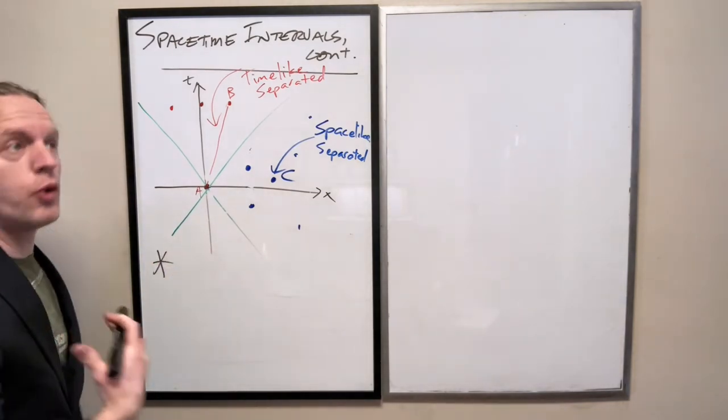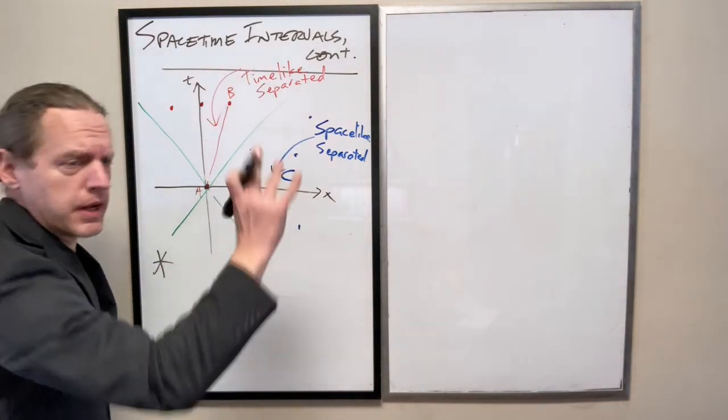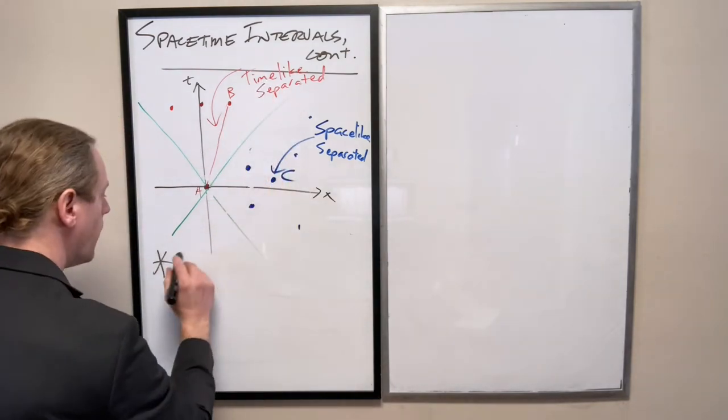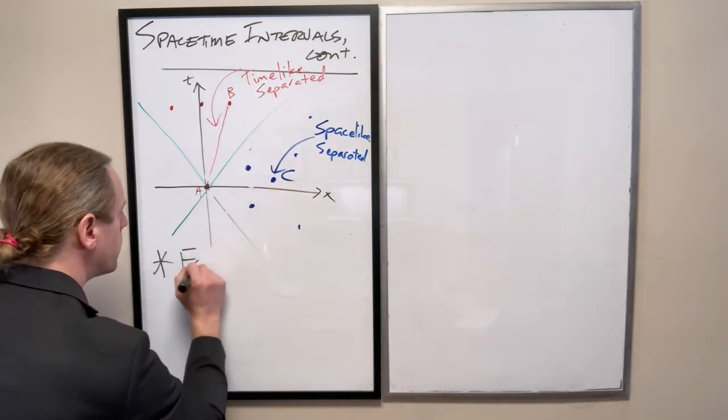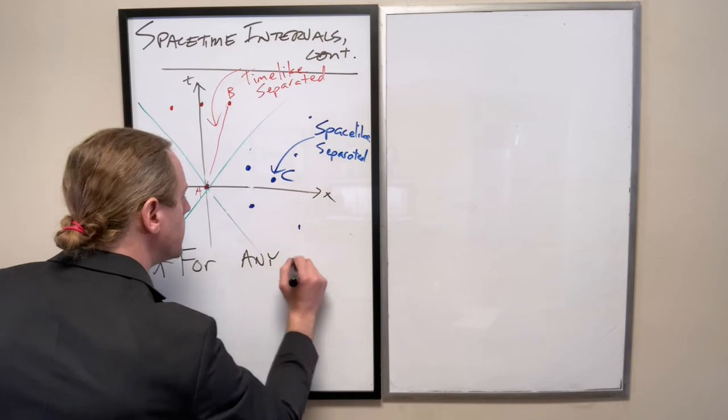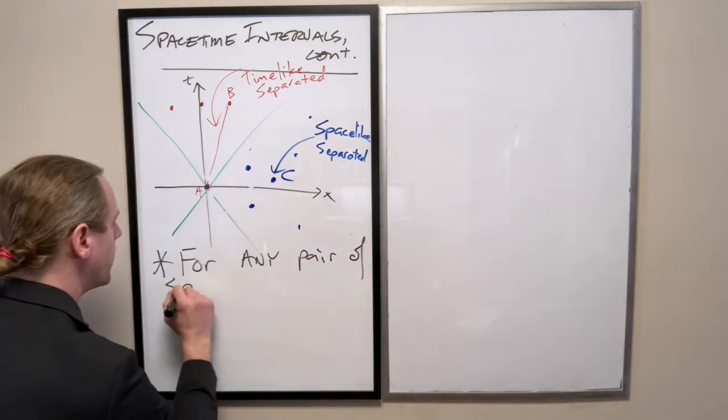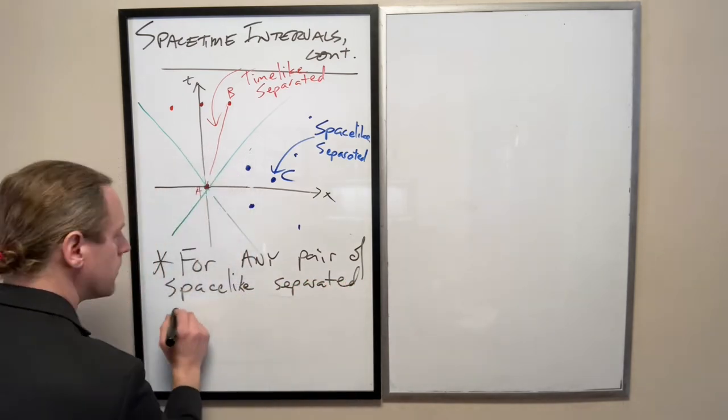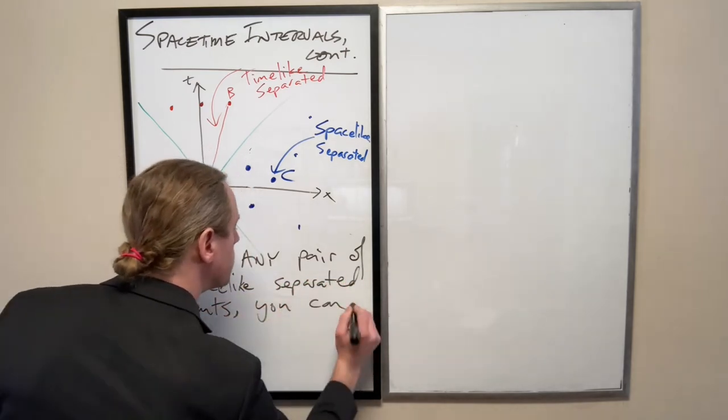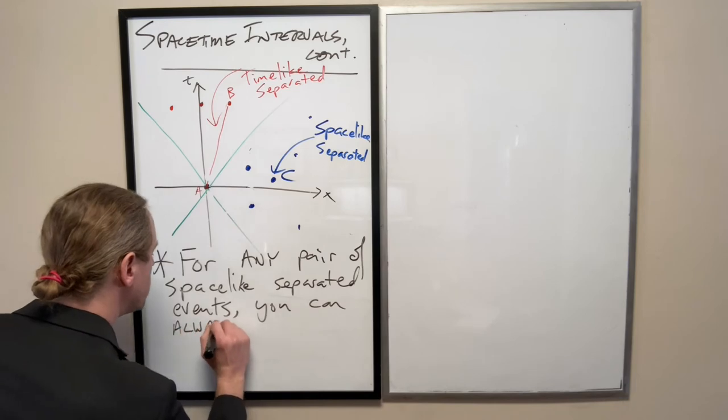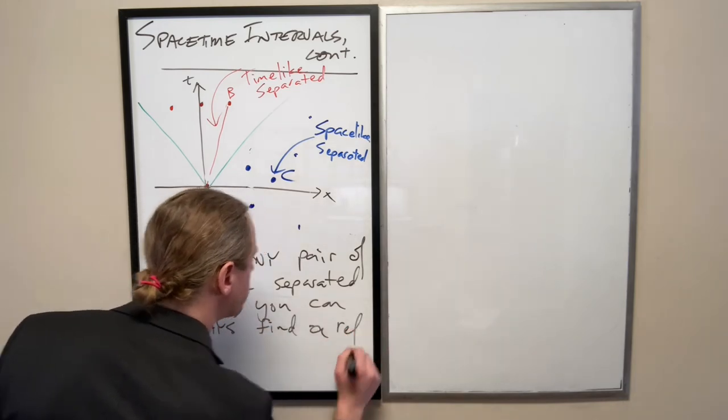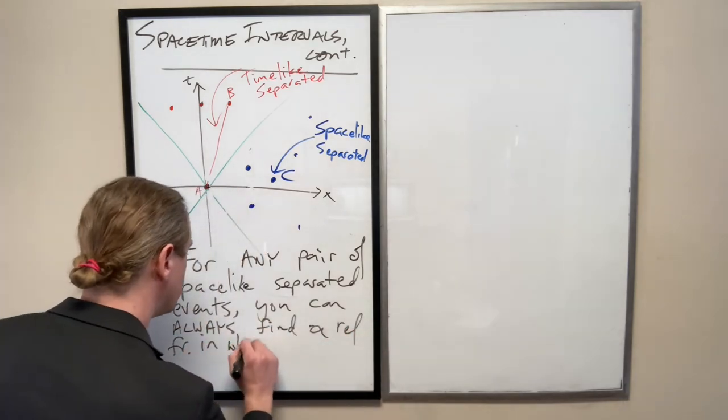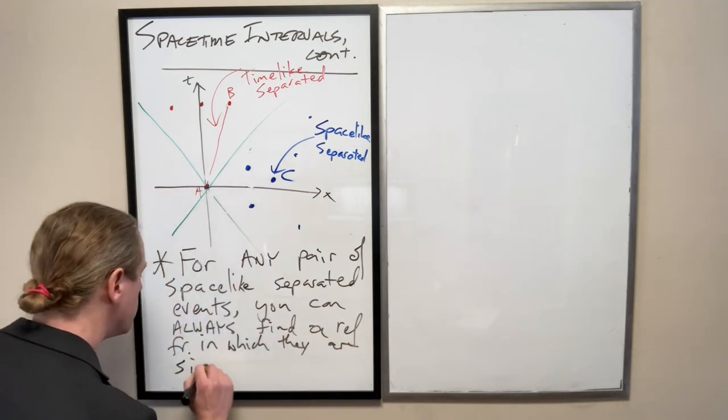And again, the important thing to note, just like time-like events but with one word flipped: for any pair of space-like events, you can always find a reference frame in which they are simultaneous.